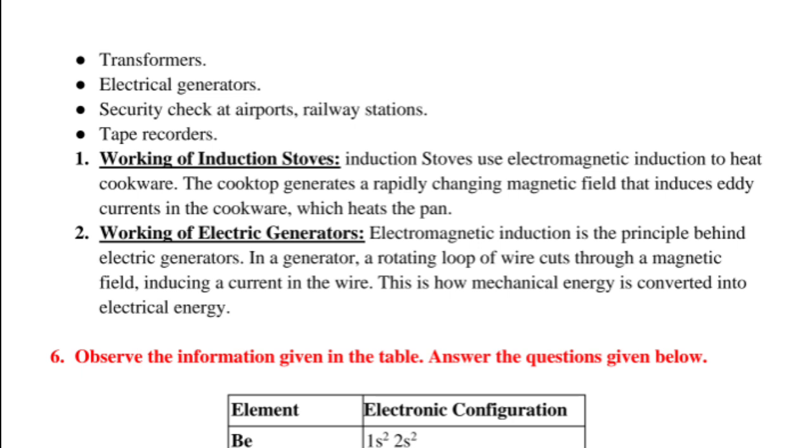1. Working of induction stoves. Induction stoves use electromagnetic induction to heat cookware. The cooktop generates a rapidly changing magnetic field that induces eddy currents in the cookware, which heats the pan.